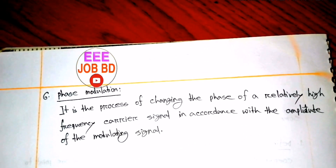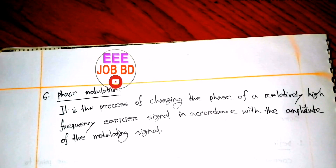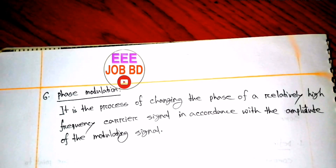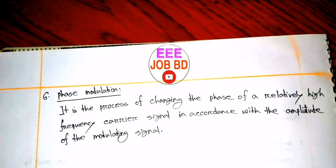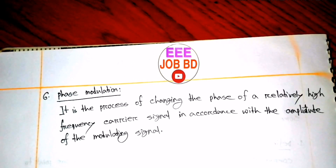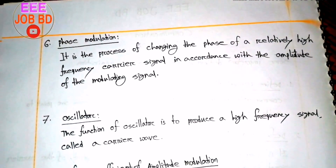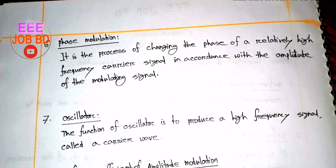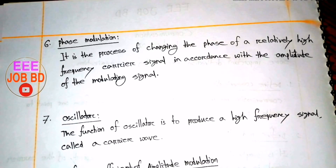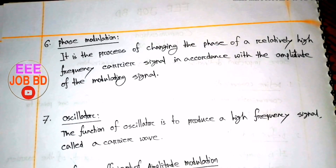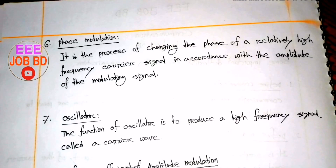Phase Modulation (PM) is the process of changing the phase of a relatively high-frequency carrier signal in accordance with the amplitude of the modulating signal. The modulating signal determines the phase change of the carrier wave.